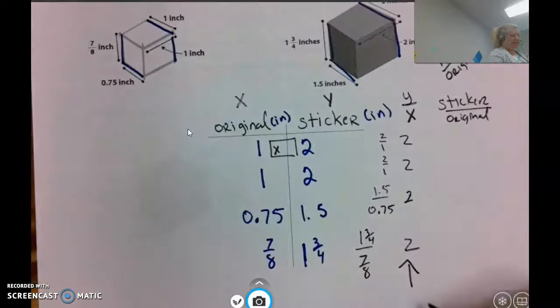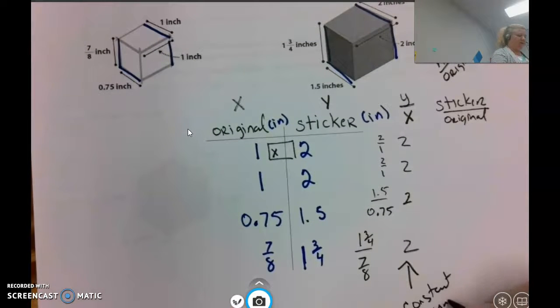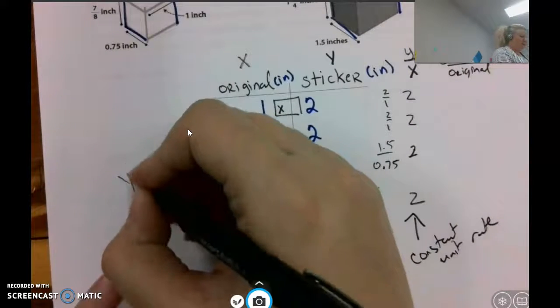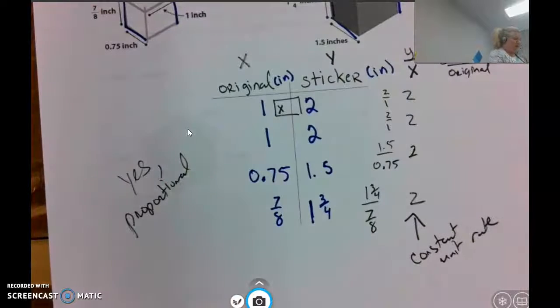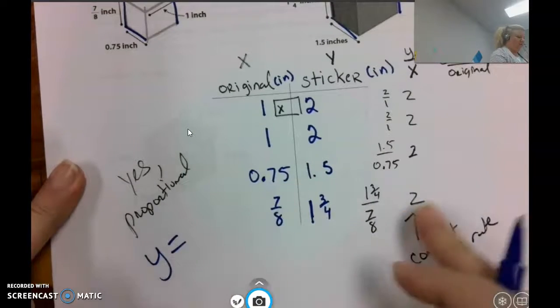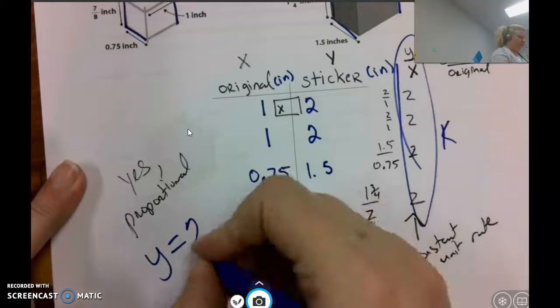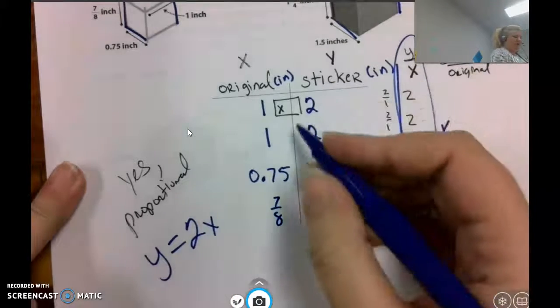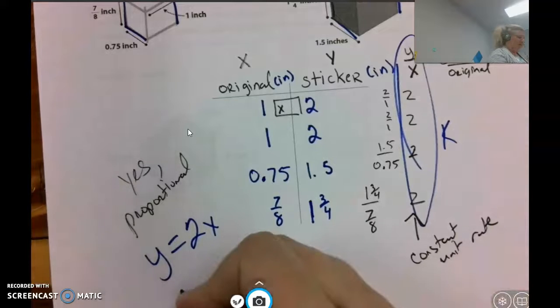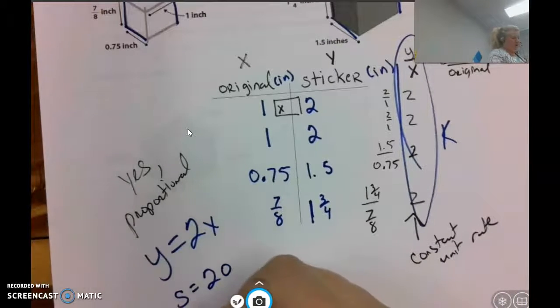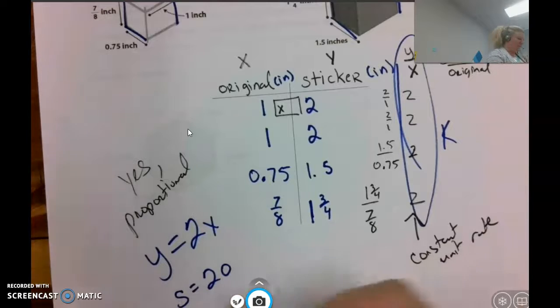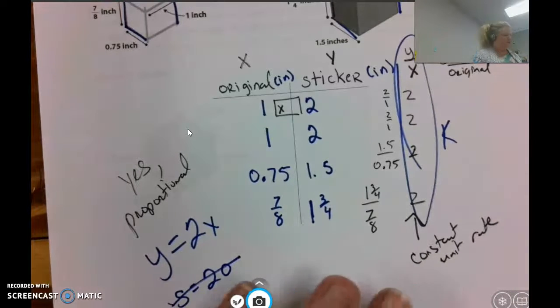We have a constant unit rate, which means that this is, yes, this is proportional. We could even write an equation for this, which we've been doing all along. Y equals, there's my k, 2x. Or I could do sticker equals 2 times original. That looks really confusing because this could be a 5, that could be a 0. I would stick with y equals 2x on this one.